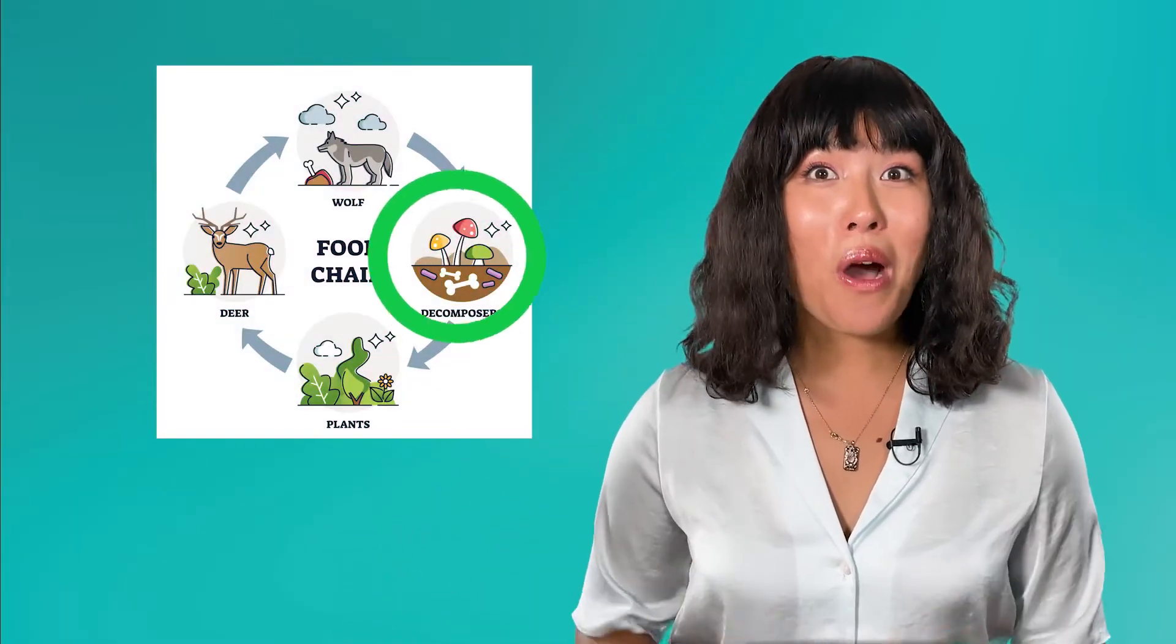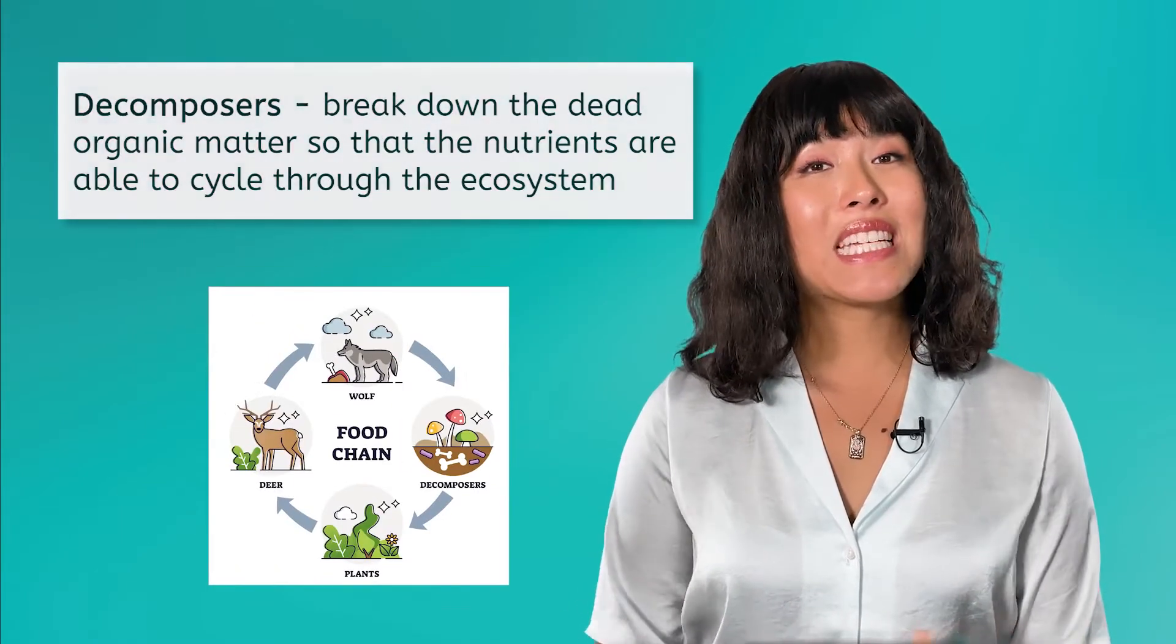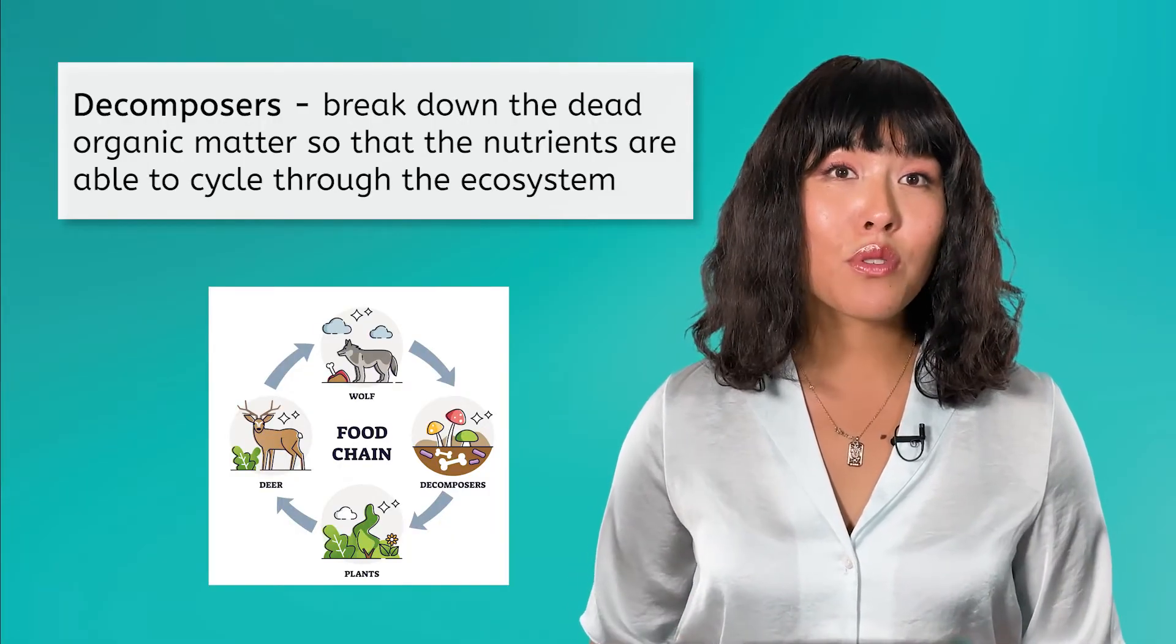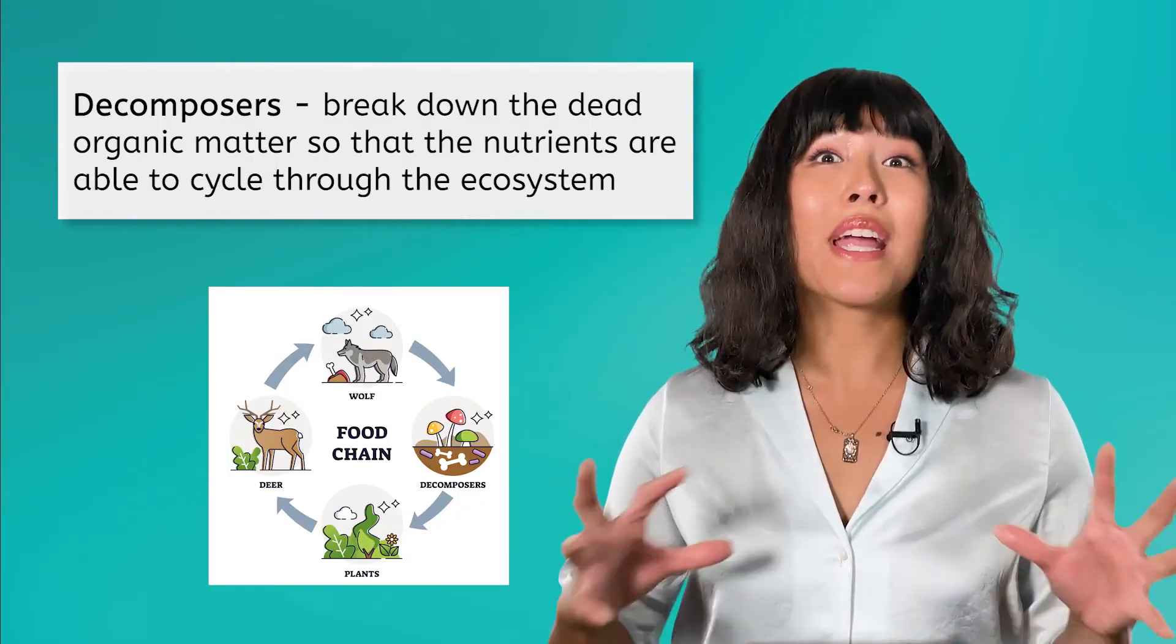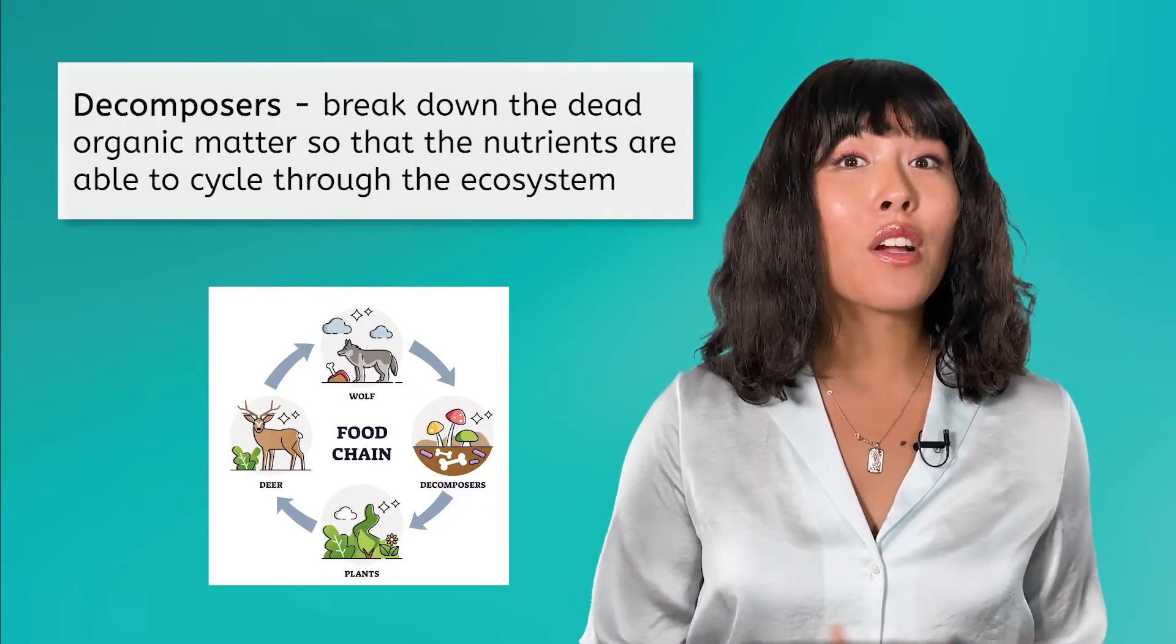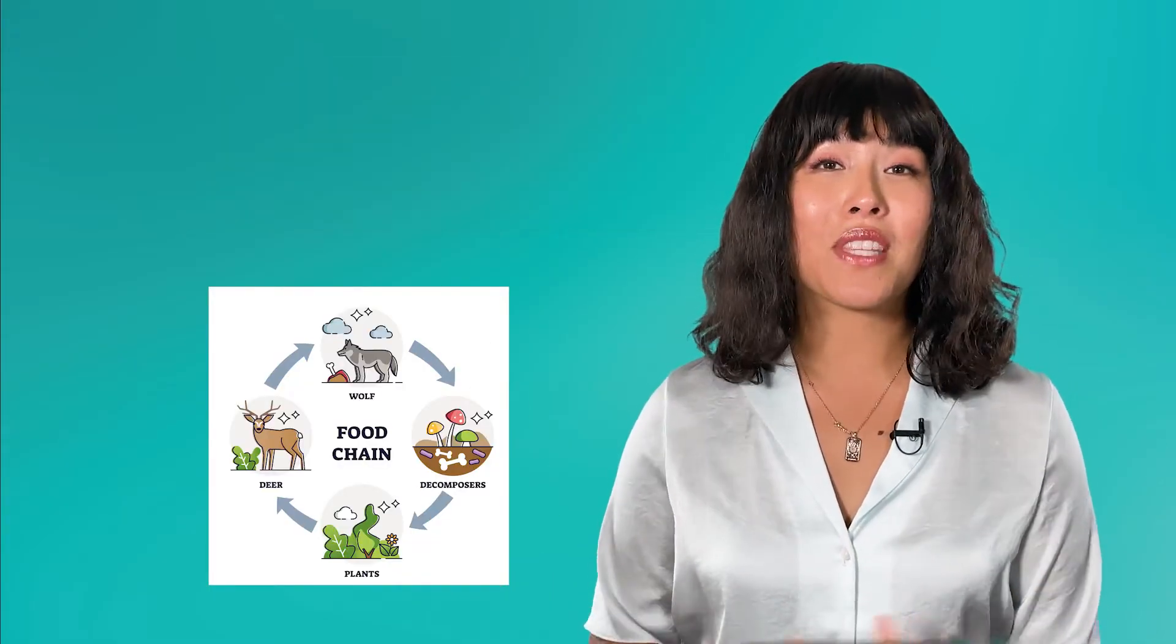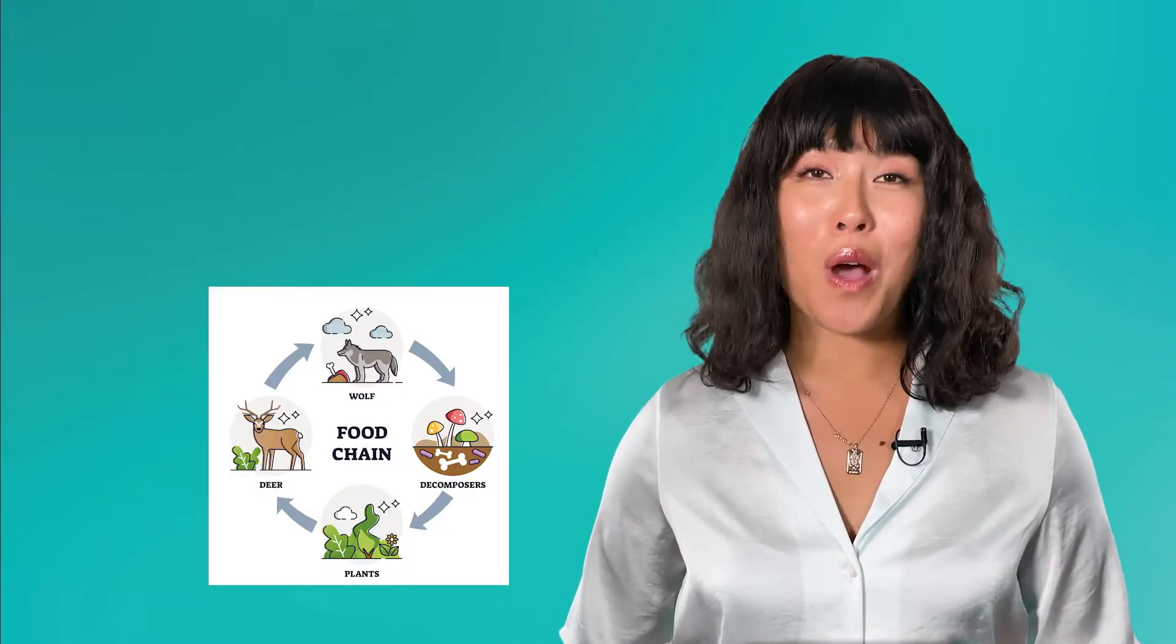So far in our food web and food chain, we have left out one very important step, the decomposers. The role of the decomposers in an ecosystem is to break down the dead organic matter. This means that when plants and animals die, decomposers like worms, bacteria and fungi have the important role of breaking it down so that the nutrients are not locked in a dead organism and can therefore complete the circle of life. We often forget about the decomposers, but their role is invaluable in the food webs of ecosystems.